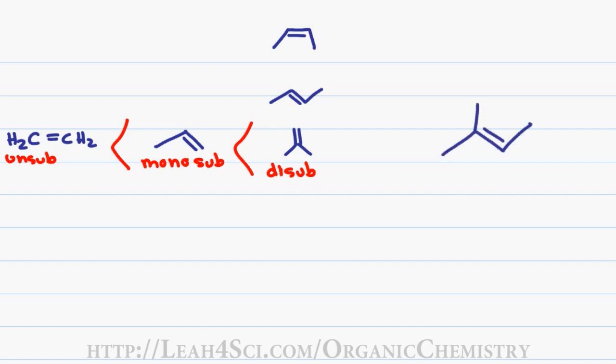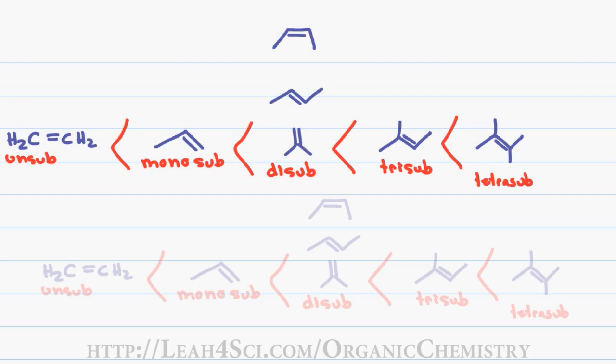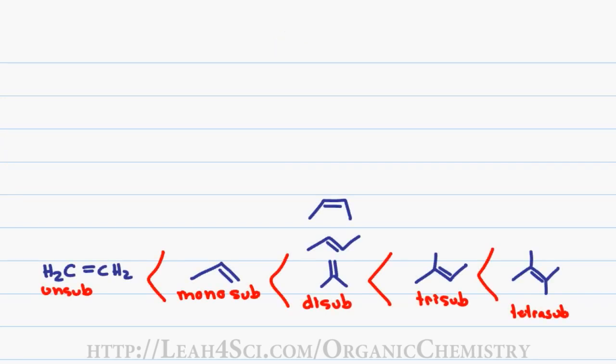Next we have the tri-substituted alkene which has three substituents coming off of the pi bond, and finally we have a tetra-substituted alkene which has the maximum number of carbons coming off of the sp2 or pi bound carbons. These are simplifications of molecules. So how do you check on a larger molecule to see how many substituents you have? We'll use the highlighter trick.